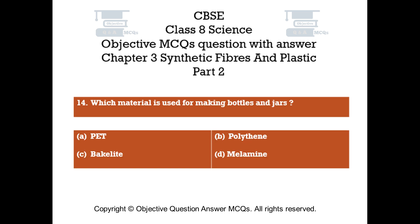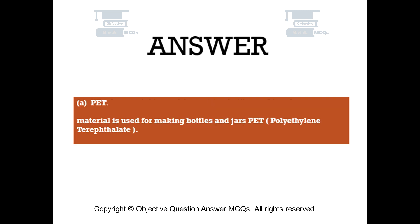Question number 14. Which material is used for making bottles and jars? Option A - PET, Option B - polythene, Option C - Bakelite, Option D - melamine. The right answer is Option A, PET — polyethylene terephthalate. PET material is used for making bottles and jars.